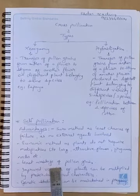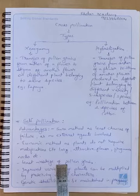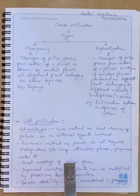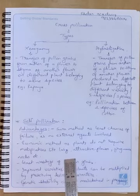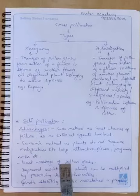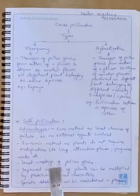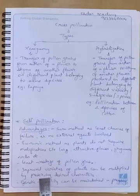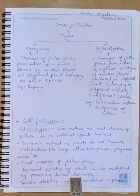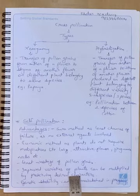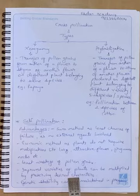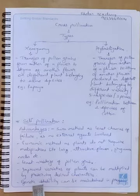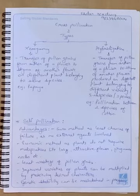Pollen grain wastage is also reduced in self-pollination, since pollen is going to fall on its own stigma rather than being dispersed widely. Additionally, improved varieties of plants can be maintained by preserving desired characters, because the next generation will carry the same characters. This provides genetic stability in the progeny.